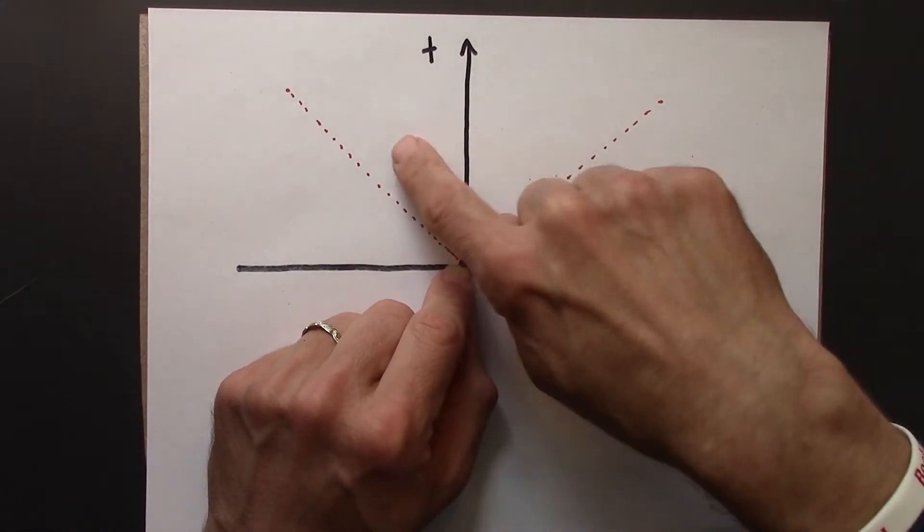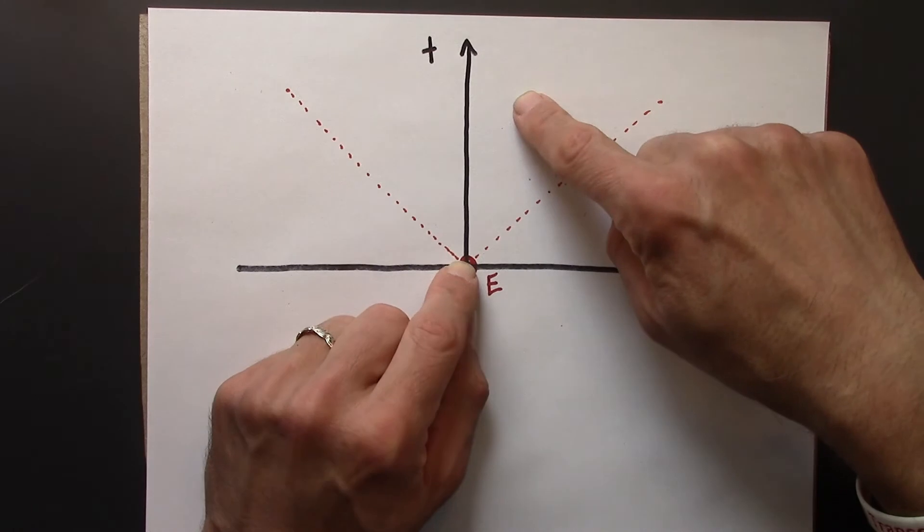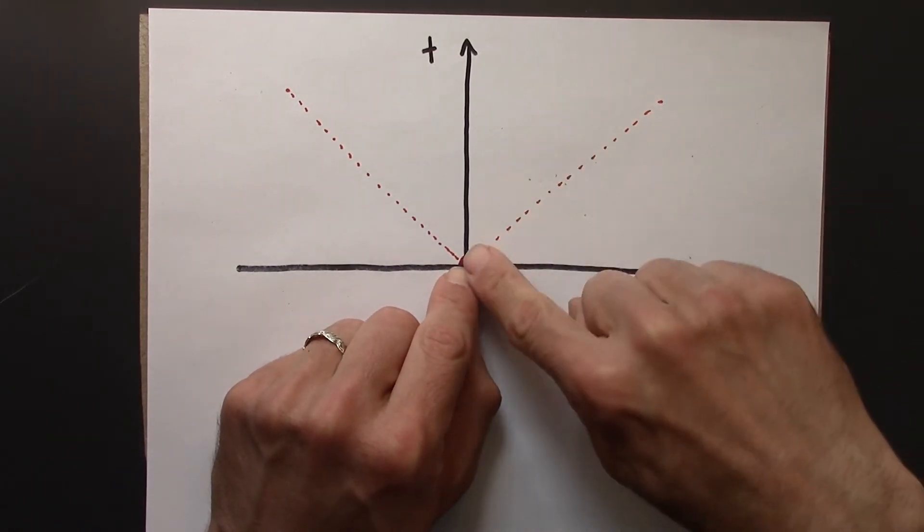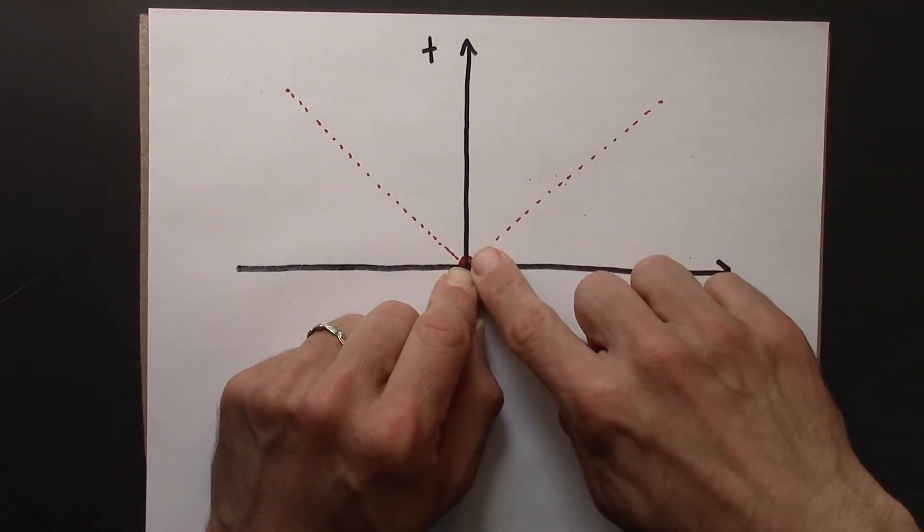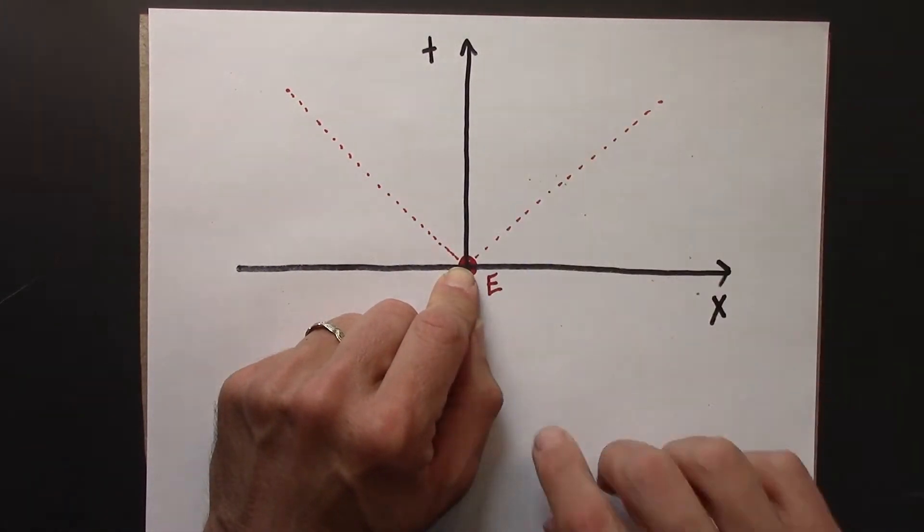Why? Because these are all the points in space-time that have a time-like relationship to e, for which delta t is greater than delta x, or delta t squared is greater than delta x squared.